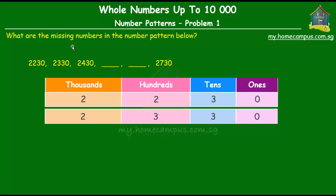Now, let's compare these two numbers and see what's changing. Looking at the digits going from the ones to the thousands, in the ones, there is no change. Both are zero. In the tens, there is no change. Both are three. In the hundreds, we see that the two becomes three. So there's a difference of 100 between the two numbers.